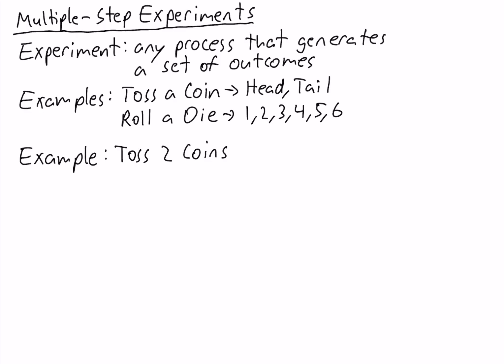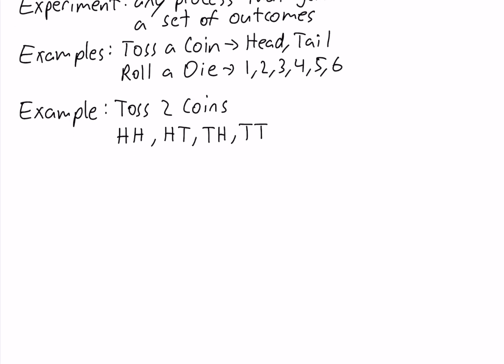There are four possible outcomes in this multiple-step experiment. It was easy to find how many outcomes there were because we could simply write out all the different outcomes and see that there are four. But sometimes there will be many possible outcomes, so what we can do in those cases is use the counting rule for multiple-step experiments.